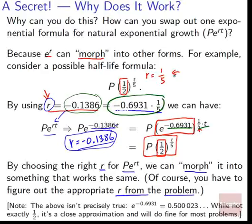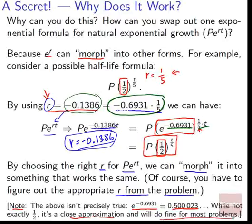We'll show a specific use of this in example two. I want to note: the above isn't precisely true. e to the negative 0.6931 isn't precisely one-half — it's actually 0.50023, which is really, really close to one-half but not exactly. It's a close enough approximation that it will normally work fine. If you need more accuracy, you could figure out r to more decimal places.